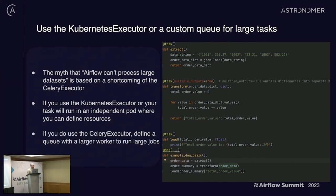And finally, when it comes to doing actual data processing in Airflow, people think Airflow is only for external work. But in reality, if you're using either the Kubernetes executor or a Celery queue specifically made to have larger workers, there's no reason why you can't have large jobs going on inside your Airflow tasks. At the end of the day, they're just Python processes. If the worker or pod you're creating is large enough to take a large data frame, you can do large data frame work within your Airflow system.